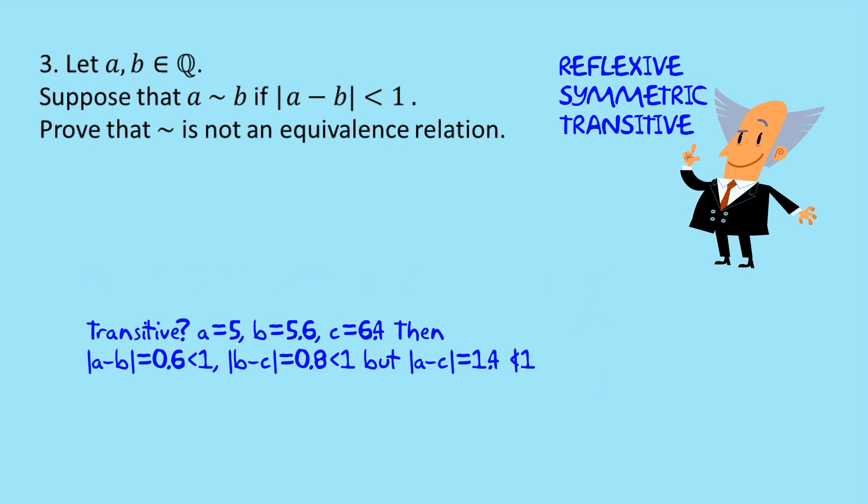By playing around with some numbers, I can find an a and a b that satisfy the relation, a b and a c that satisfy the relation, but a and c won't. So what I've got here is a equals 5, b equals 5.6, c equals 6.4. And I've picked these numbers so that a is related to b because the absolute value of a minus b is 0.6, which is less than one. The absolute value of b minus c is 0.8, which is less than one. So b is related to c. But you can see that the distance from c to a is 1.4 and that's not less than one.